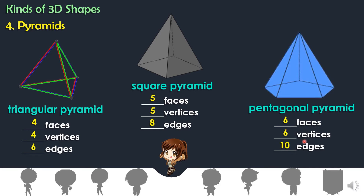How about vertices? One, two, three, four, five, six. The pentagonal pyramid has six vertices. Let us count the edges: one, two, three, four, five, six, seven, eight, nine, ten. Pentagonal pyramid has ten edges.